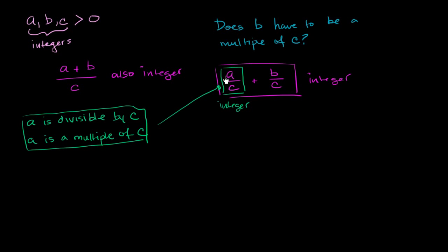Now, if I have an integer and I add something to it, and the whole thing is an integer, then the thing I'm adding must be an integer. The only way that I get an integer plus something to be an integer is if the thing I'm adding is also an integer. There's no way I could add an integer to a non-integer and get an integer. So b over c has to be an integer.